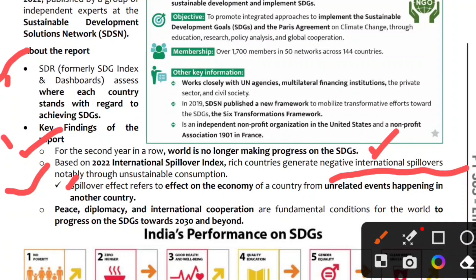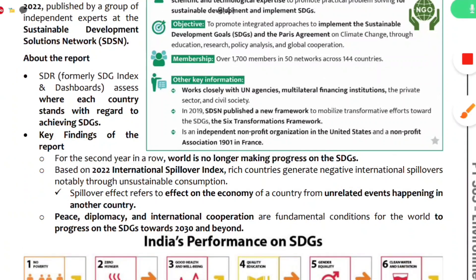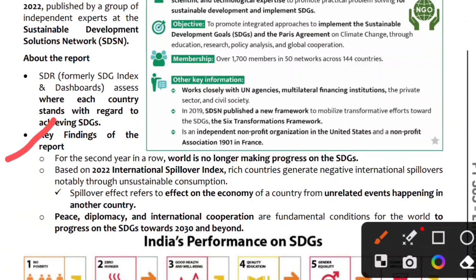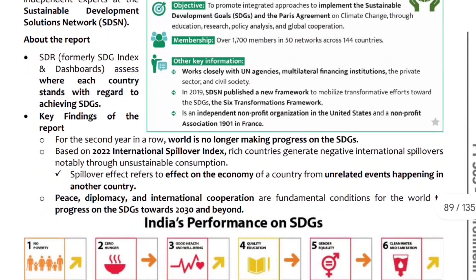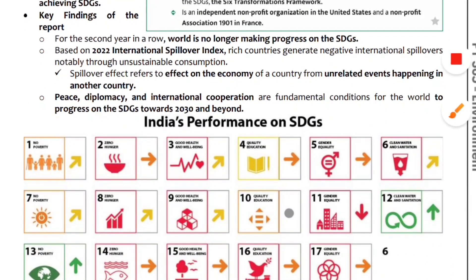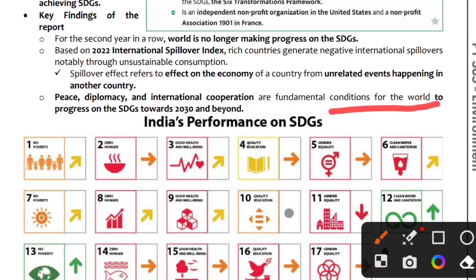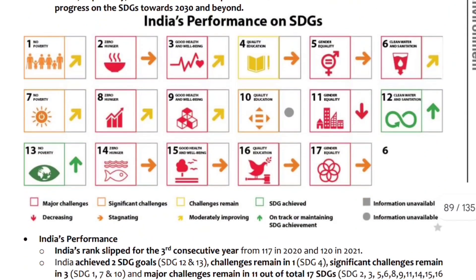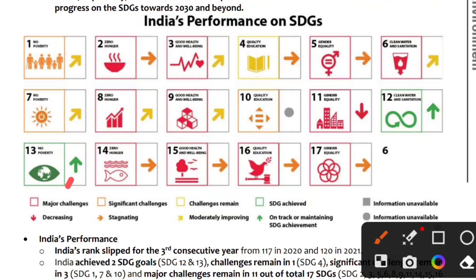For example, oil-producing countries are affected by economic disruptions. Even Ukraine and Russia are affected, and the economy has been impacted, generating negative progress on SDGs.